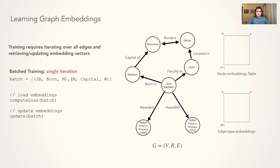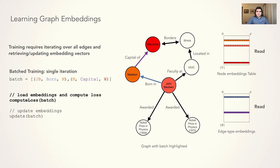To illustrate a single iteration, take a given batch size of two: John born in Madison and Madison capital of Wisconsin. To compute the loss of this batch, the embeddings of the nodes and edge types used in the batch will need to be read from storage. After computing the updates from the loss, the embedding vectors are updated.